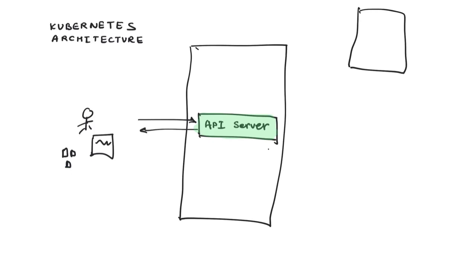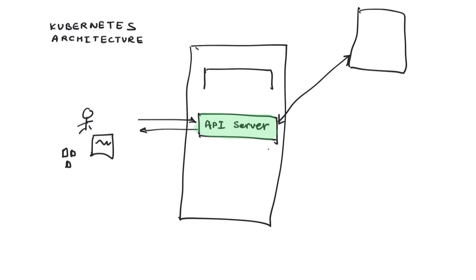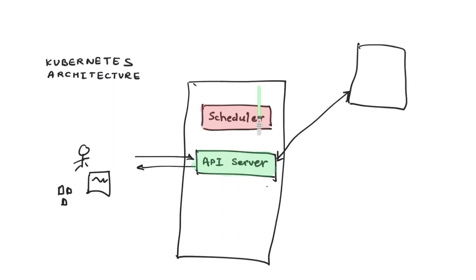Even the nodes talk to the API server — there is a component from the node which talks to the API server. The API server coordinates with all the other components and then gets things done. The second very important component is the scheduler.